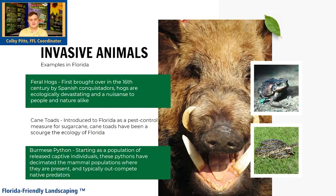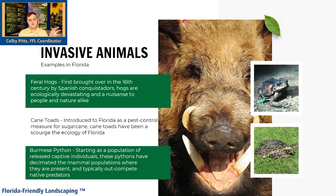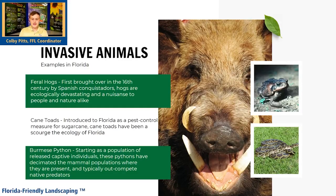Next up is the cane toad. Don't touch them — they have a toxin coating their glands. Like I said earlier, they were introduced as pest control for sugar cane pests, but they've had a really negative impact on our native amphibian population. They're even known to eat small birds — these guys get pretty big.